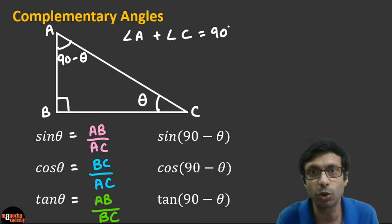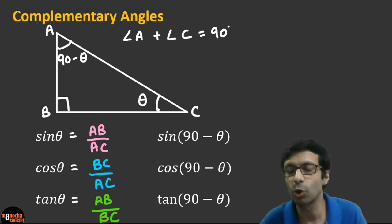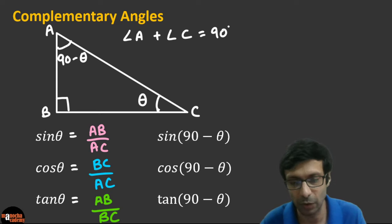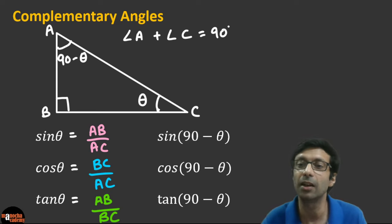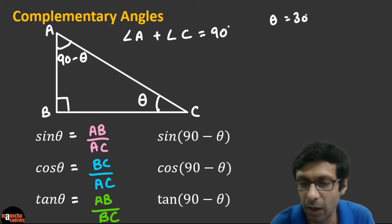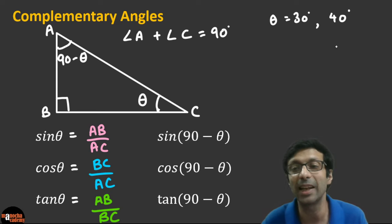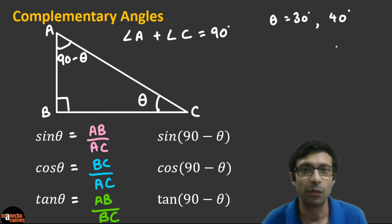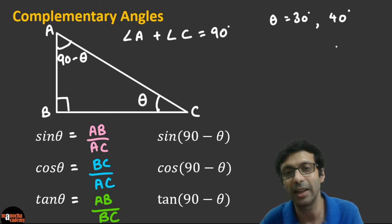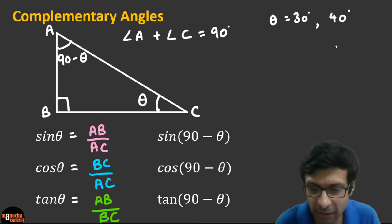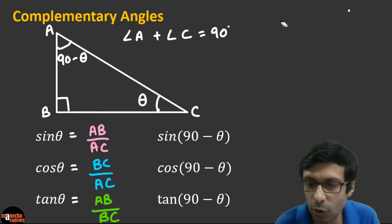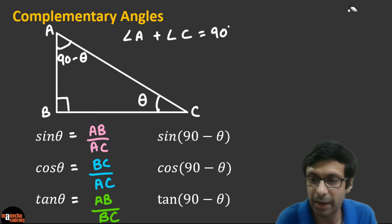Theta is just a symbol we use to denote the angle — it's a variable, just like x in algebra. The angle theta can take values like 30°, 40°, 45°, whatever. In trigonometry we usually mark the angle as theta. Now let's look at what sine(90 minus theta) is going to be in terms of the sides — the sine of angle A, which is 90 minus theta.